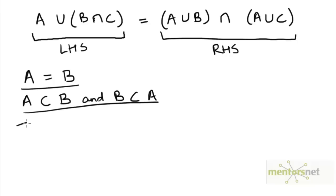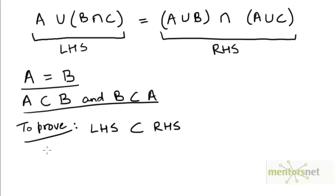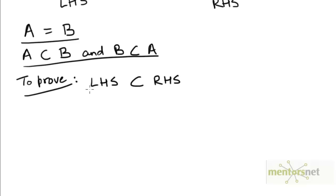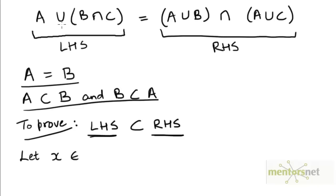So let's first try to prove that the set on the left hand side is a subset of the set on the right hand side. This means we have to prove that an arbitrary element drawn from this set will also be an element of this set. So let's take an arbitrary element — let's call it x. Suppose x belongs to the set on the left hand side, which is A union (B intersection C).